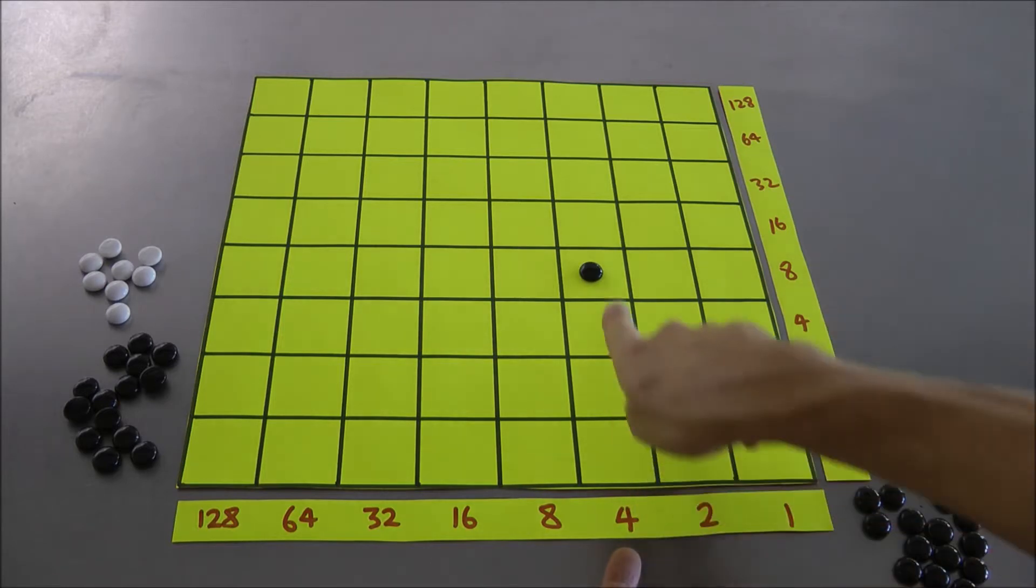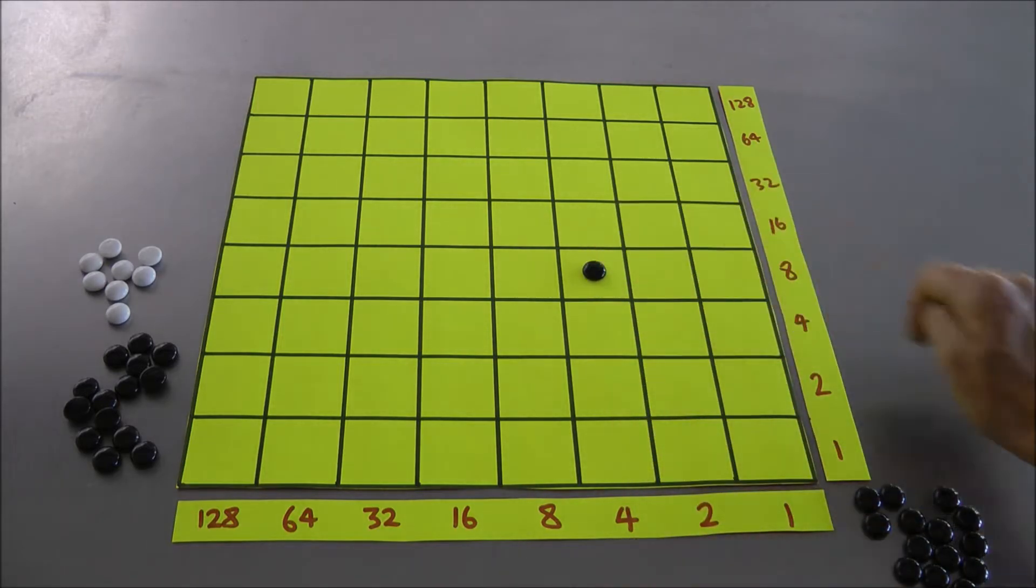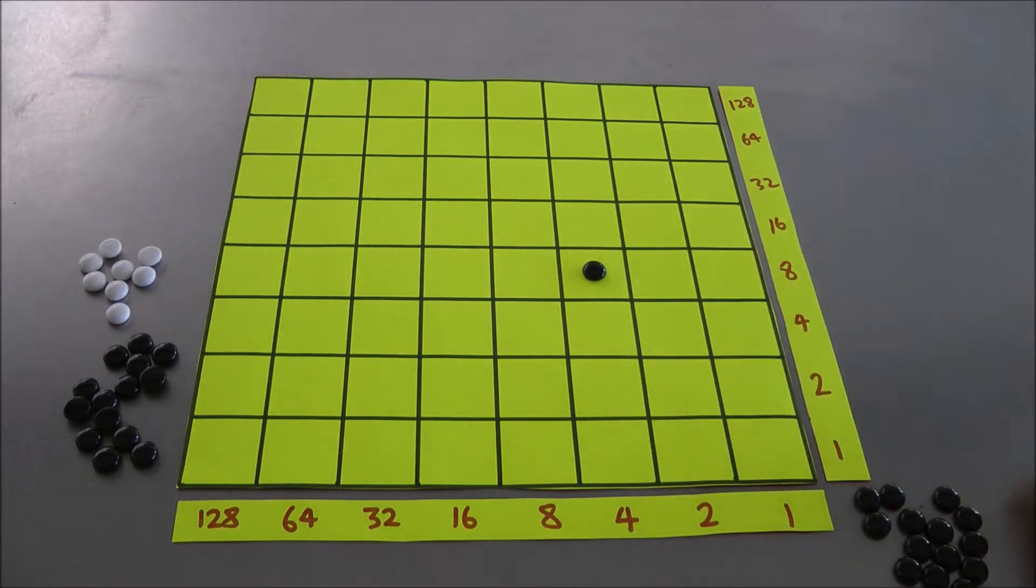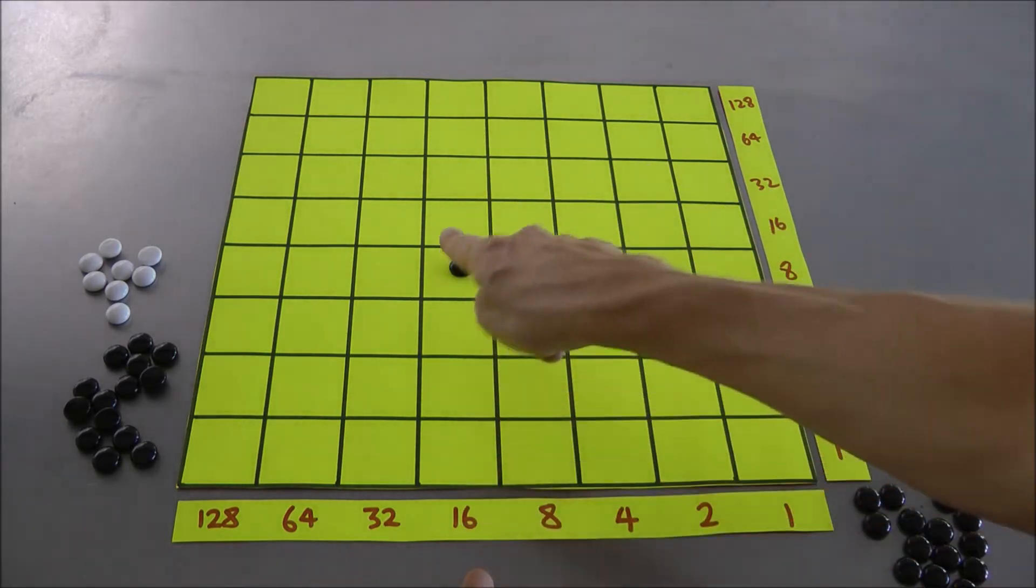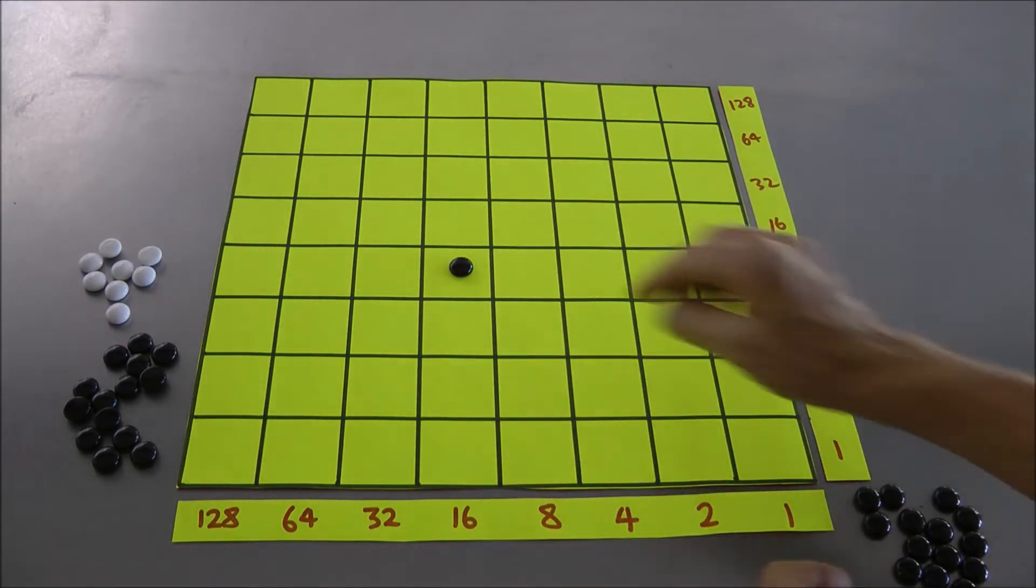So think of this as 4 times 8. This counter is now worth 4 times 8, this counter is now worth 32. Or if I put it over here, it'll be worth 16 times 8, whatever that is. Or if you put it over here, it'll be worth 4 times 2. If you put it over here in the corner, it'll be worth just 1 times 1.